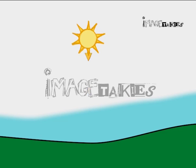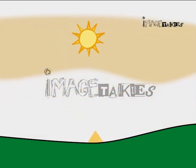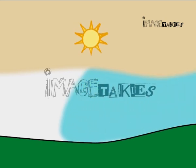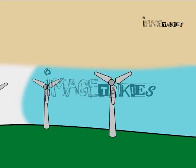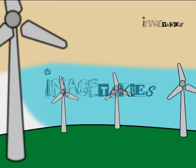Solar energy heats the air near the earth. The hot air becomes lighter and rises up. This results in a low pressure area. Cooler air flows into this region, giving rise to wind. Thus, wind energy is due to solar energy.